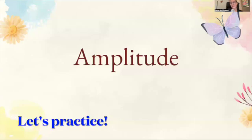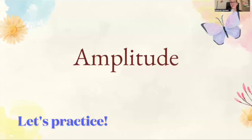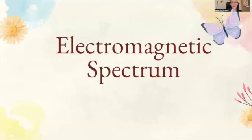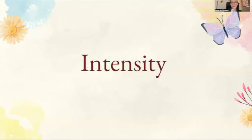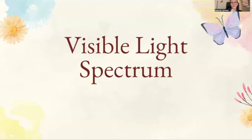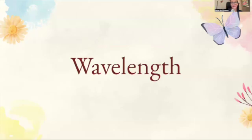Now pause between each word and see if you can come up with a definition and example. The terms to review are: amplitude, electromagnetic spectrum, hue, intensity, visible light spectrum, and wavelength.